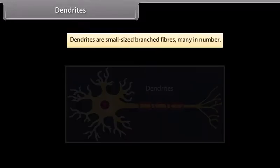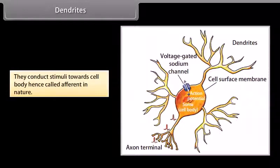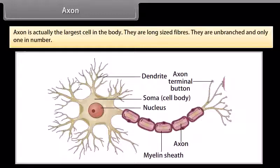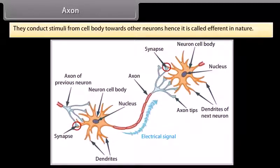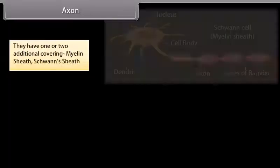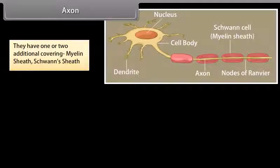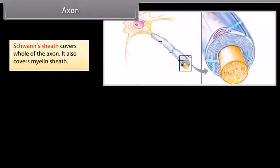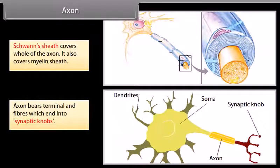Dendrites are small-sized branched fibers, many in number. They conduct stimuli towards the cell body; hence they are called afferent in nature. Axon is actually the largest cell in the body. Axons are long-sized fibers, unbranched, and only one in number. They conduct stimuli from the cell body towards other neurons; hence they are called efferent in nature. They have one or two additional coverings: myelin sheath and Schwann sheath. Myelin sheath around the axon is an insulating and protective sheath. At certain places, myelin sheath is absent, and that area is known as the Node of Ranvier. Schwann sheath covers the whole of the axon and also covers the myelin sheath. Axon bears terminal end fibers which end into synaptic knobs.